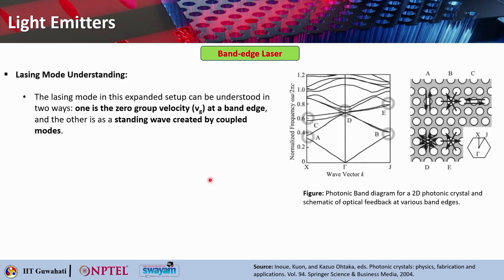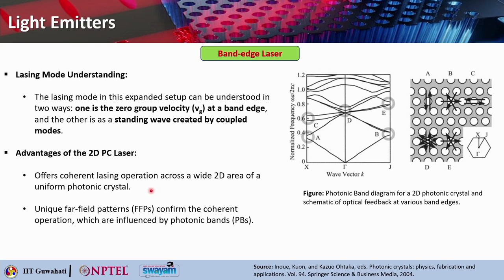To understand the lasing mode in this expanded setup, it can be understood in two ways. First, zero group velocity Vg at the band edge — the band is essentially flat, so the slope comes out to be zero. Second, it can be seen as a standing wave created by coupled modes. The mode with zero group velocity is not moving anywhere — it is kind of trapped. The standing wave, also not moving, is created by coupled modes. 2D photonic crystal lasers offer advantages such as coherent lasing operation across a wide 2D area of uniform photonic crystal, and unique far-field patterns confirming coherent operation.